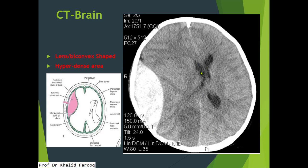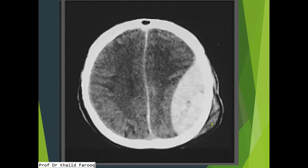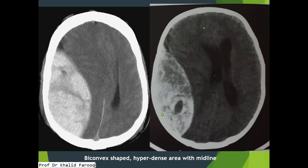Another example shows soft tissue edema in the scalp over the left temporoparietal bone. An extradural lens-like hematoma is appreciated over the left temporoparietal lobe, and mild contralateral midline shift is also appreciated. Here we see a large extradural hematoma appreciated over the right parietal lobe.